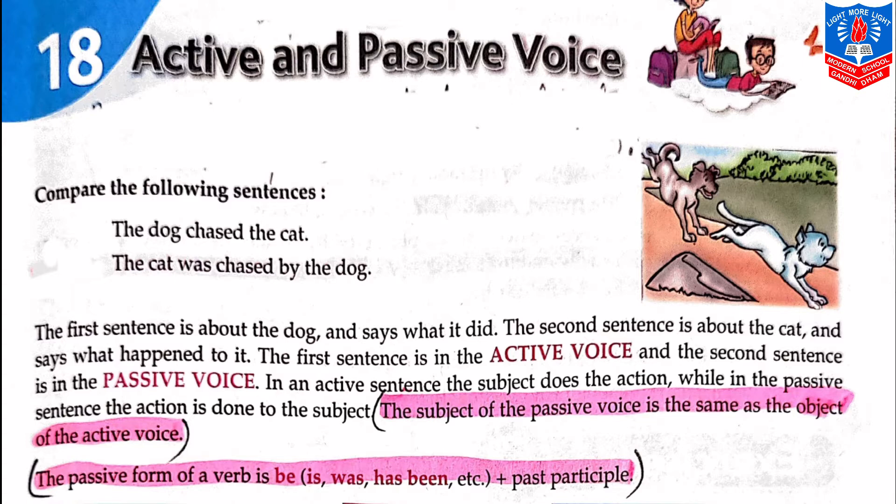As you have seen in the first case, 'the dog chased the cat' — that sentence was in active voice. In an active sentence, the subject does the action. In the first sentence, the subject was 'dog', so the dog was doing the action.